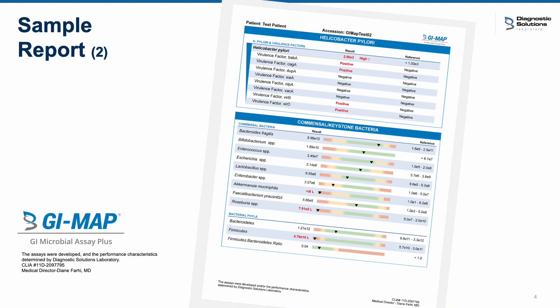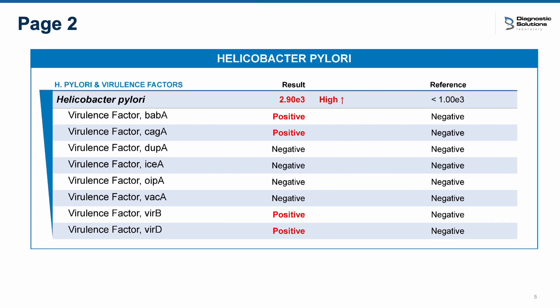Moving to page two: the GI Map remains tried and true for its sensitivity in finding and reporting H. pylori — this section has not changed. You will still see the result flagged red above our lab reference of 1.0 E3, or 1,000 microorganisms per gram, and virulence factors will still be reported if the patient's quantitative value is above 500, or 5.0 E2. For more information on virulence factors, please see our updated reference chart for these genetics, included on page 16 of our modernized GI Map interpretive guide.